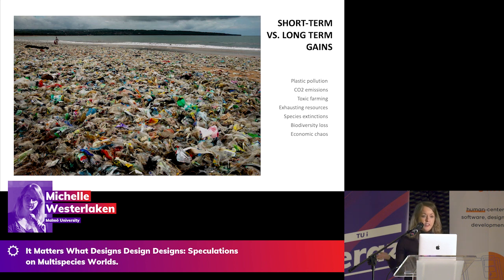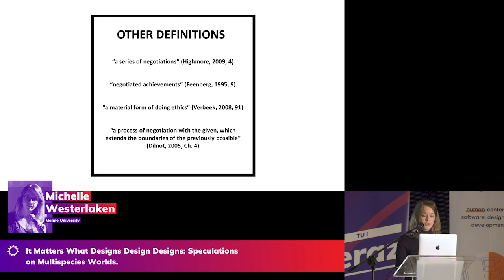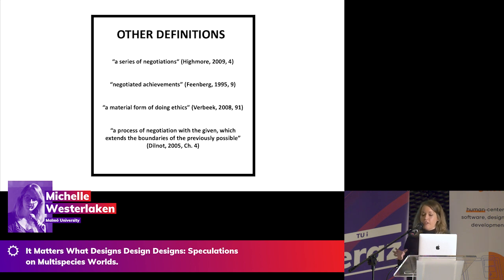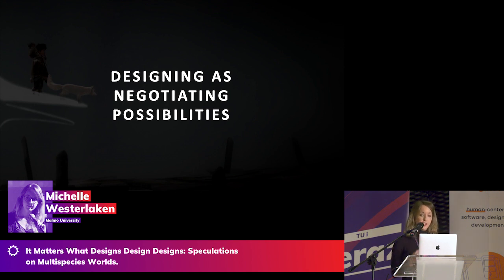Design is more than the user and more than solving a problem. Some more recent alternative definitions say design can be understood as a series of negotiated achievements, or even a material form of doing ethics, or a process of negotiation with the given which extends the boundaries of the previously possible. Instead of claiming to control or fix something, these definitions take a more humble position and see design as a process of negotiation — allowing designers to accept that they cannot always control the impact of their work, but are nonetheless ethically involved and responsible. I'm summarizing this in my research as seeing designing as negotiating possibilities.